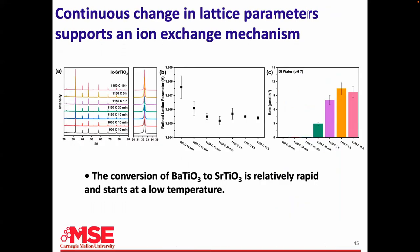The highest hydrogen yield out of any of these is with 10% methanol, but without methanol this ion-exchange material works just as well — which is remarkable. The fact that it can oxidize water as easily as methanol means the oxidation is not the rate-limiting step. This reaction converts very quickly: by 10 minutes at 1100 degrees, it already has the lattice constant of strontium titanate, and as soon as you have the conversion, you get this high hydrogen yield.